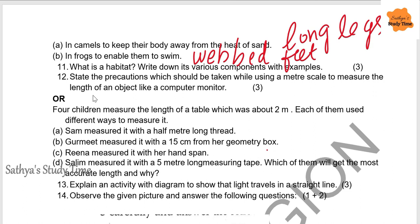Four children measured the length of a table about two meters. Sam used a half-meter long thread, Gurpreet used a 15 cm ruler from her geometry box, Reena used a hand span, and Salim used a five-meter long measuring tape. Which one gets the most accurate length and why? Salim, because the measuring tape gives accurate results. A thread is unreliable, 15 cm ruler is too short for two meters, and hand span differs person to person.